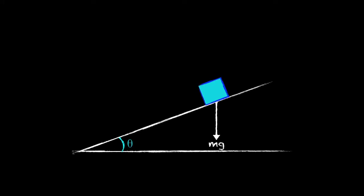There also needs to be a force counteracting the weight because the object isn't falling into the slope, and that force is called the normal reaction force and it's perpendicular to the slope.